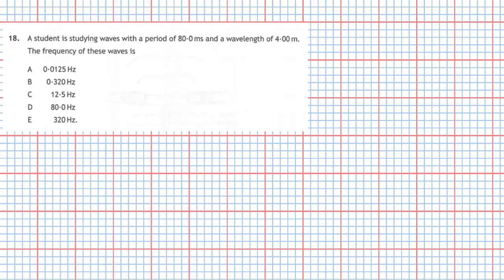Question 18 from section 1 of the 2019 National 5 Physics Examination. A student is studying waves with a period of 80.0 milliseconds and a wavelength of 4.00 meters. The frequency of these waves is, and we're given our usual five choices.